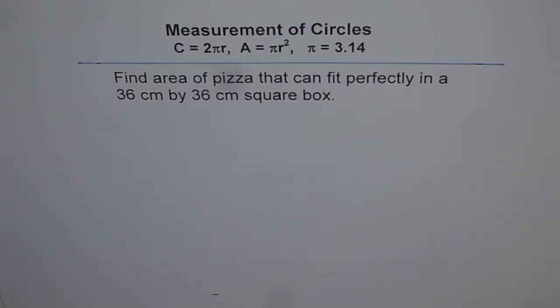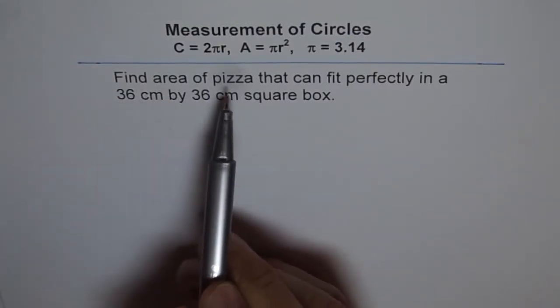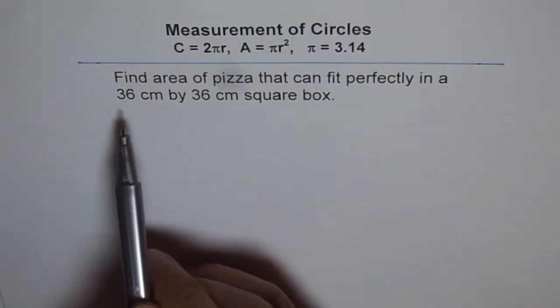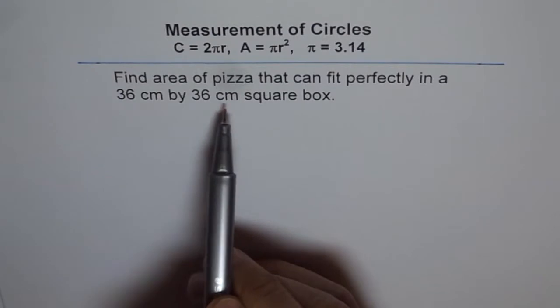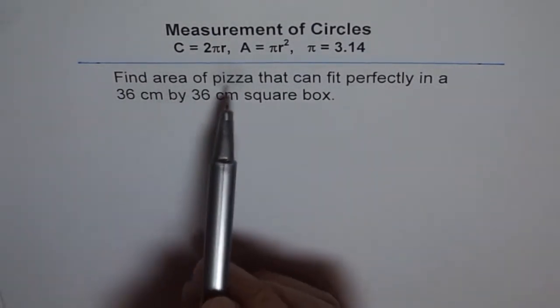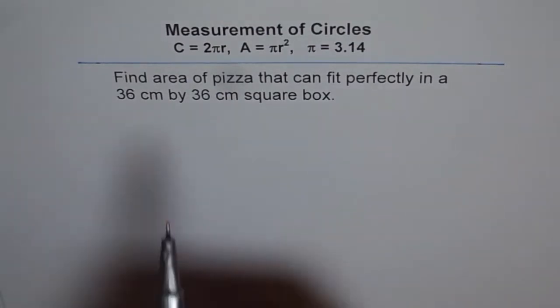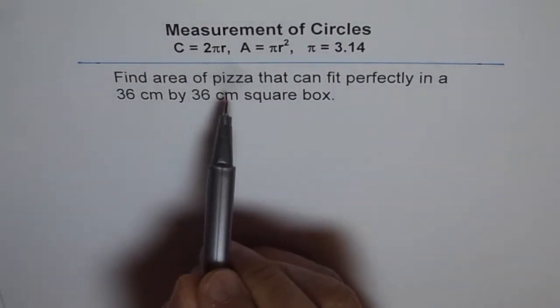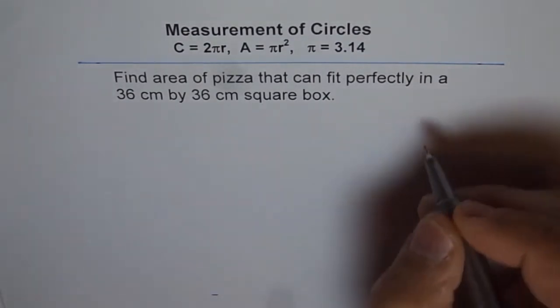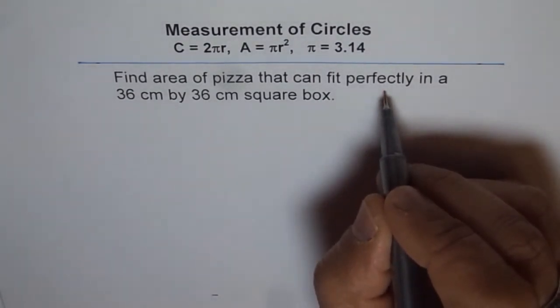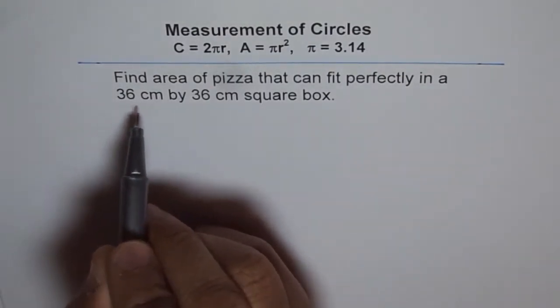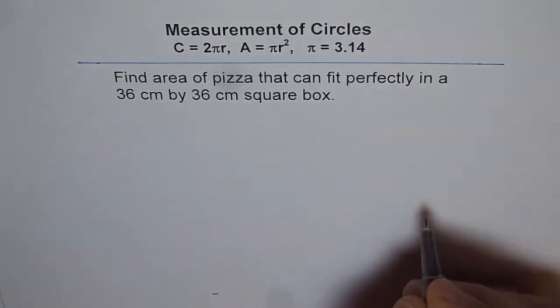Here is an application problem. Find the area of pizza that can fit perfectly in a 36 cm by 36 cm square box. Now we are assuming that this pizza is circular. So let me make it very clear: find the area of circular pizza which can fit perfectly in a square box whose dimensions are 36 cm by 36 cm.